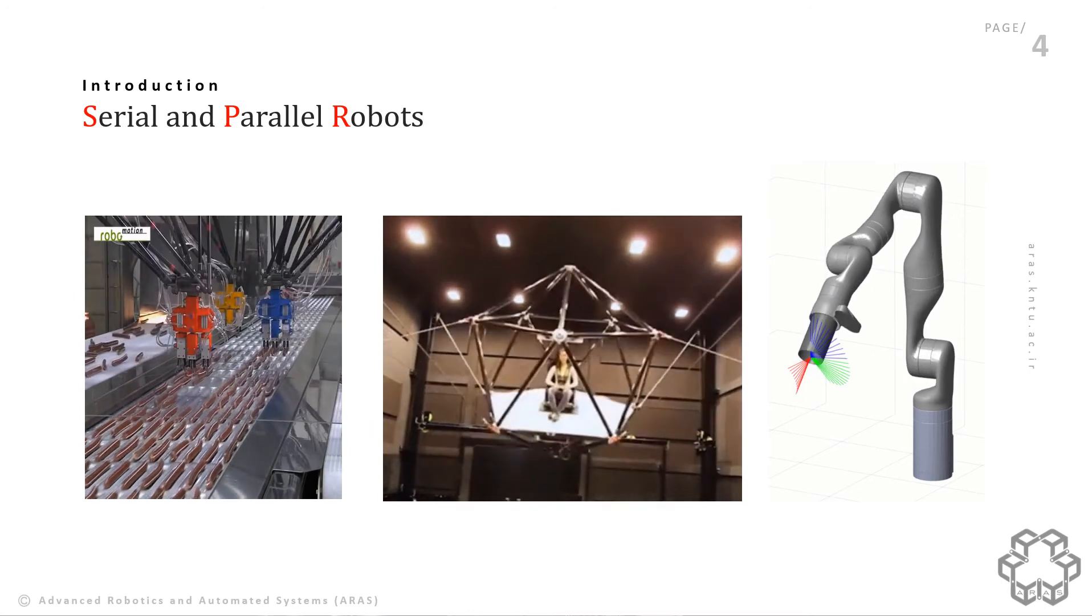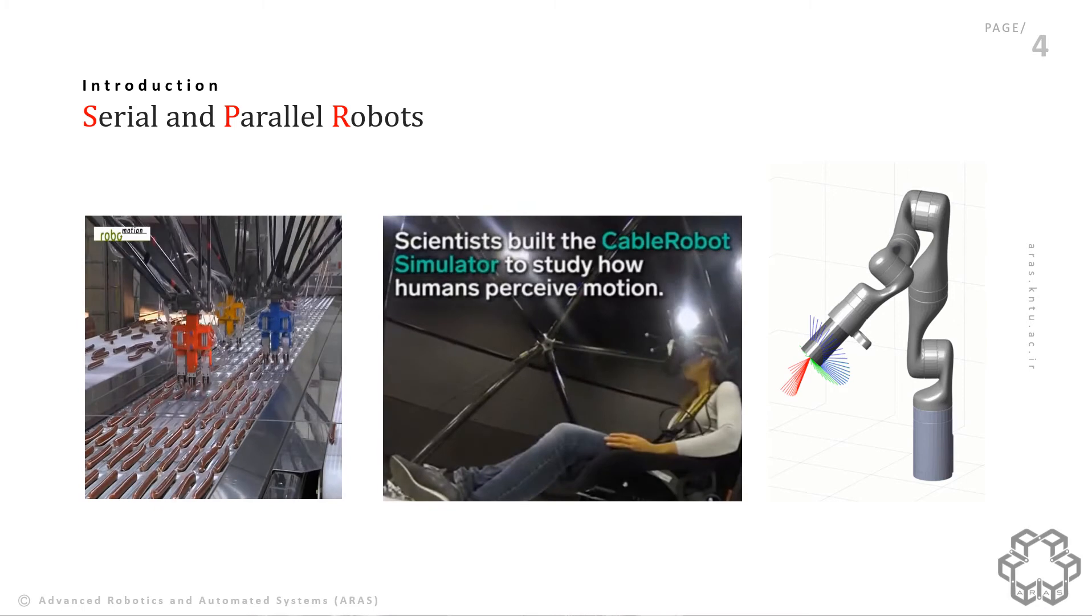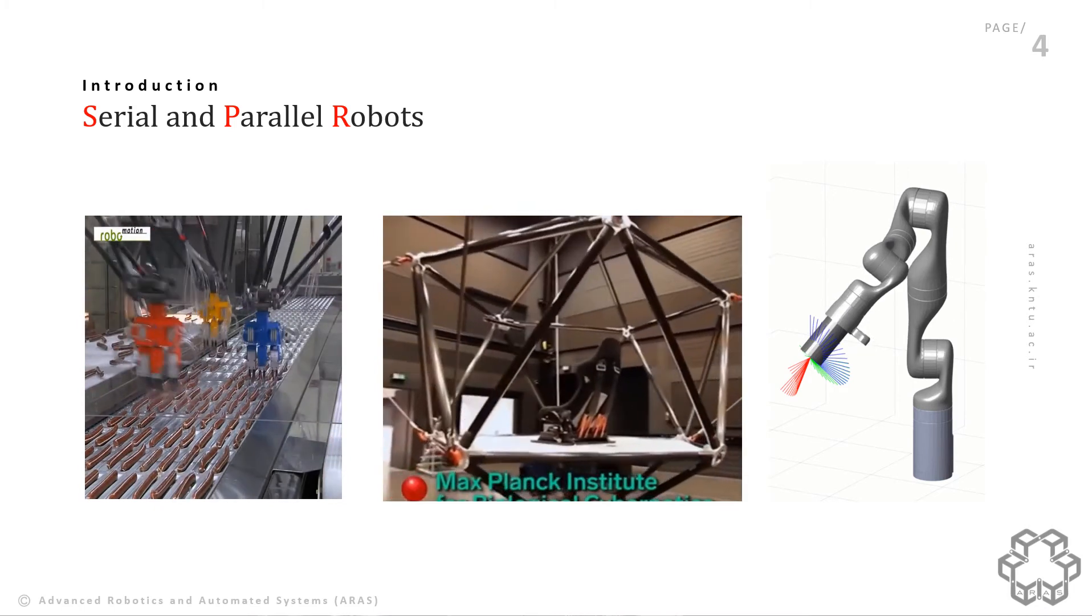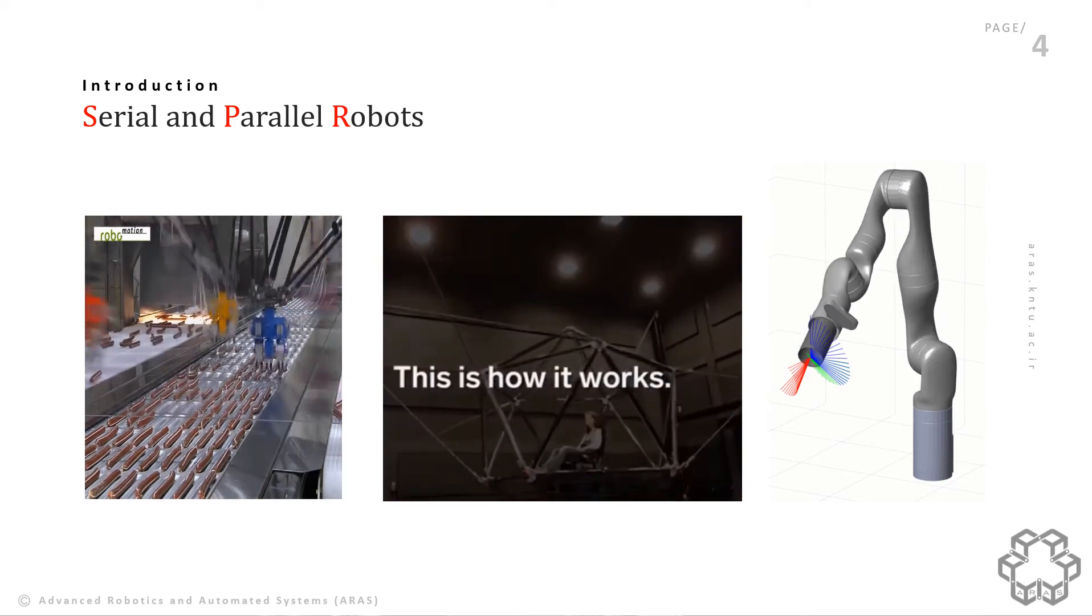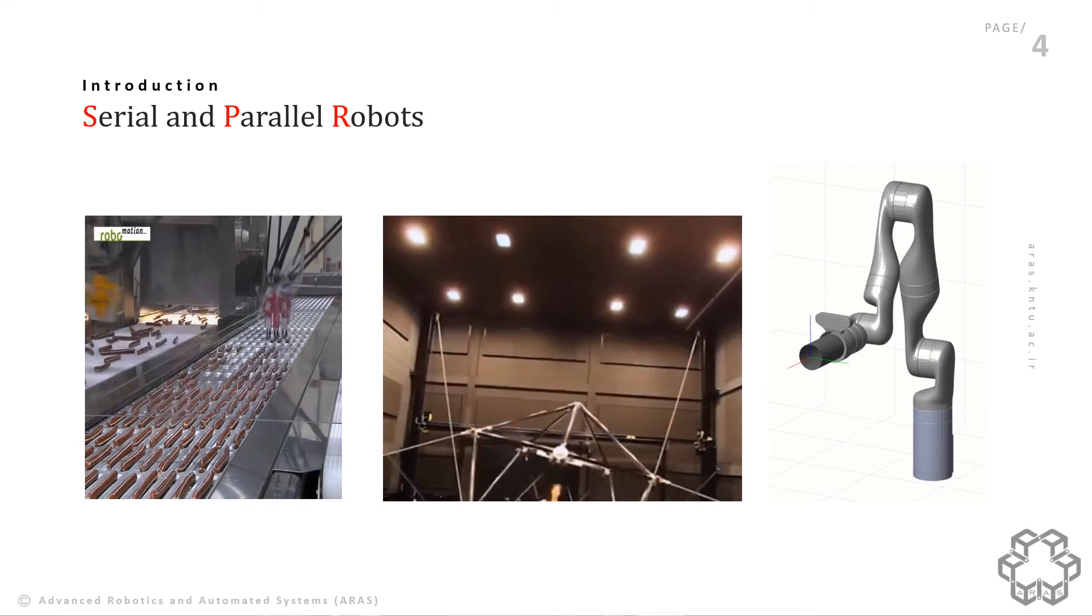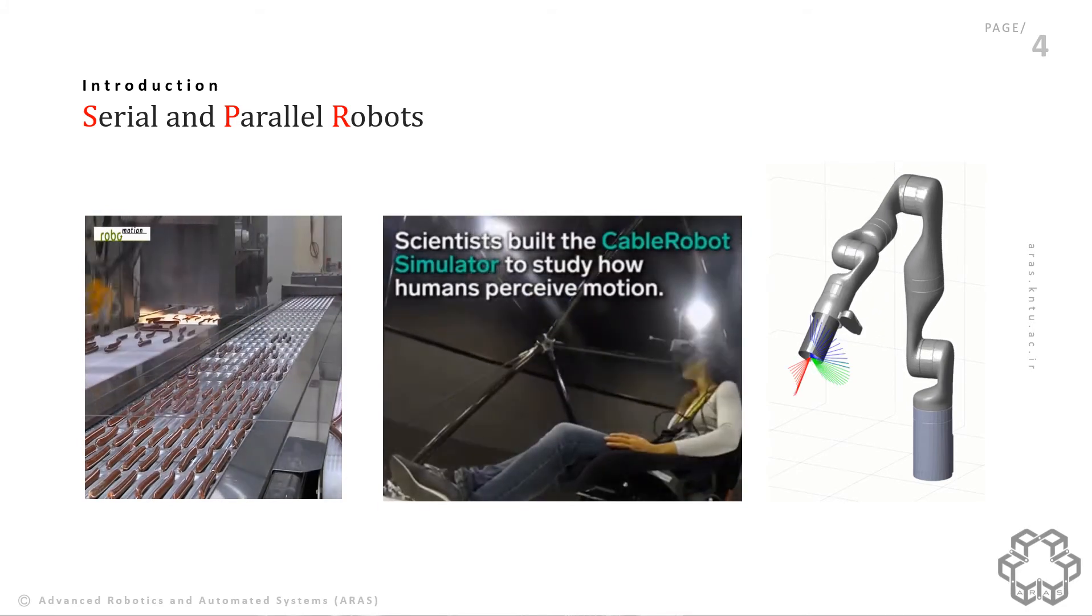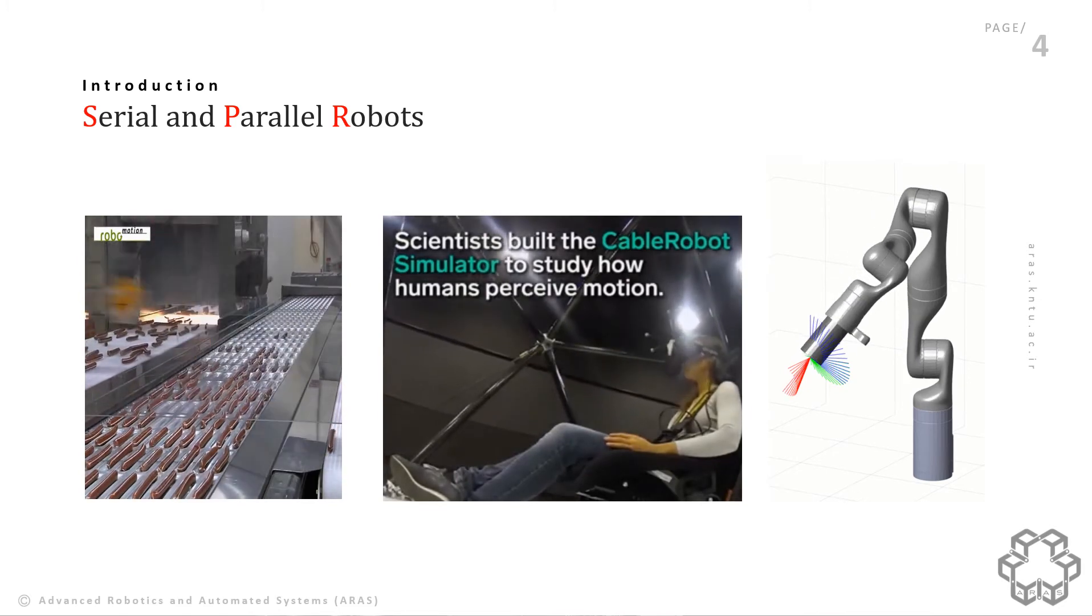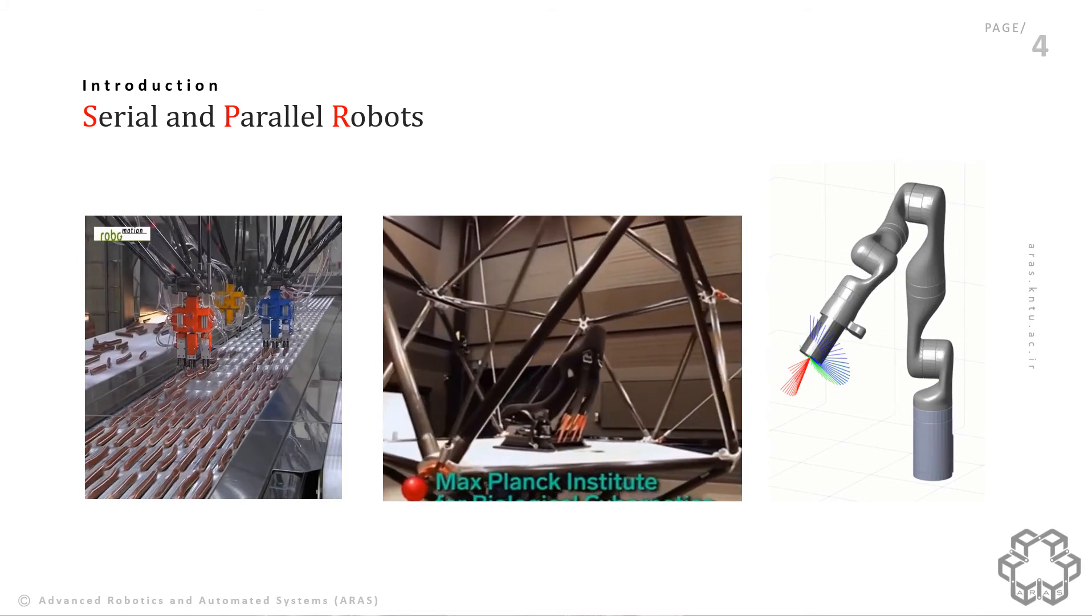But what about the third one? Cable-driven robots. The cable-driven robots have extensively played well in tasks that require large workspace by replacing rigid links with cables. Some drawbacks of conventional serial and parallel robots are remedied. At the next slide, the details of cable-driven robots will be discussed more.